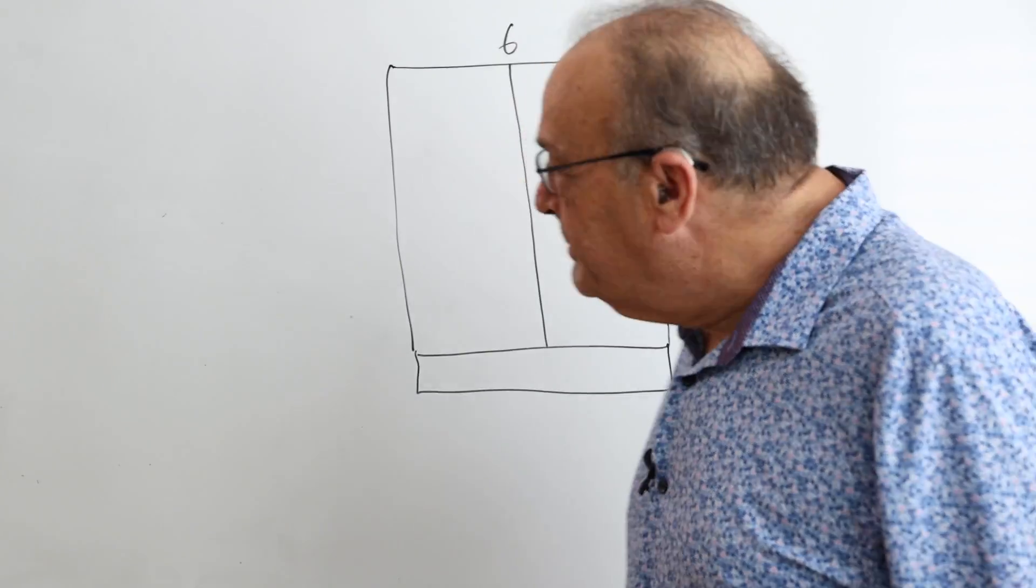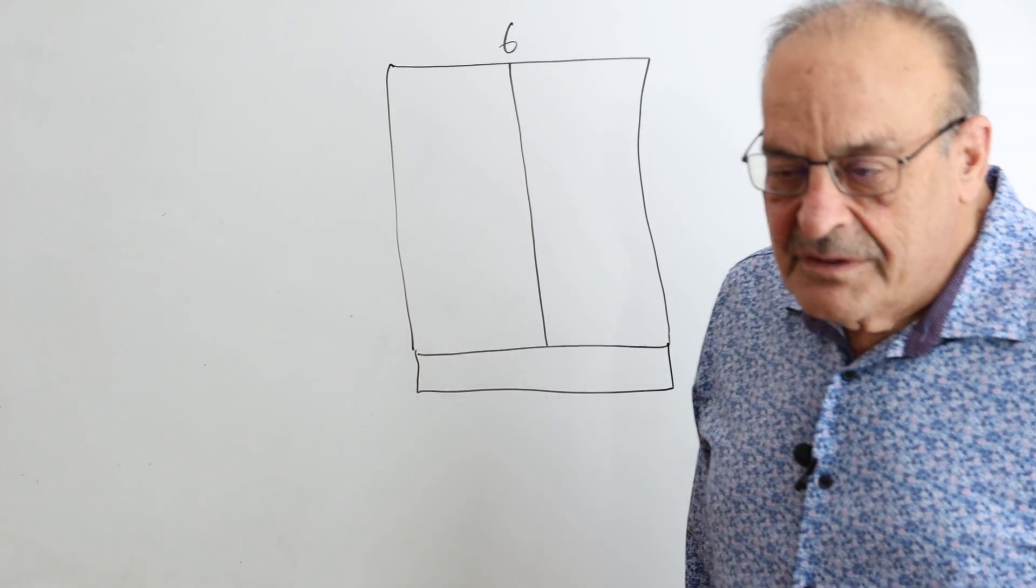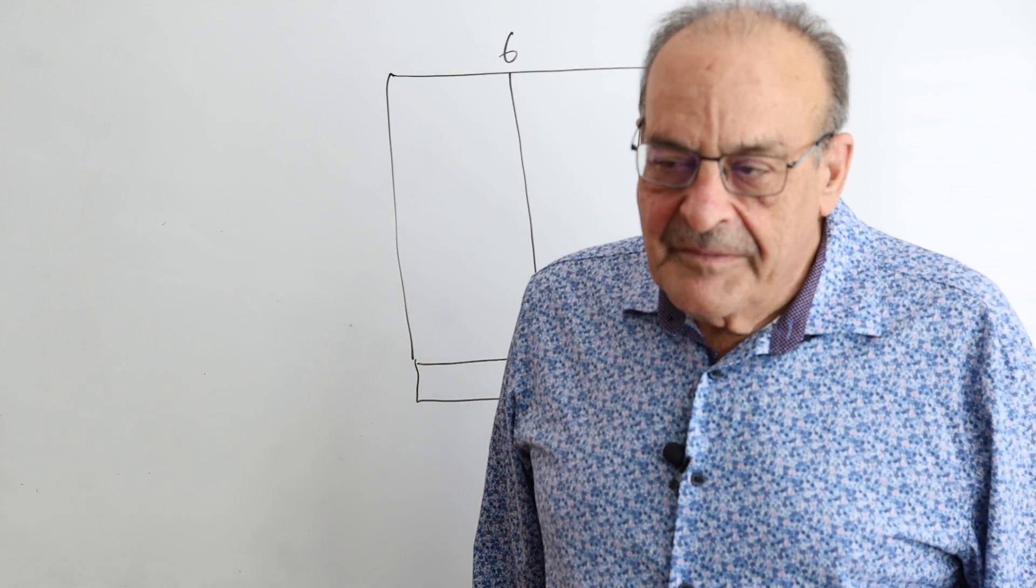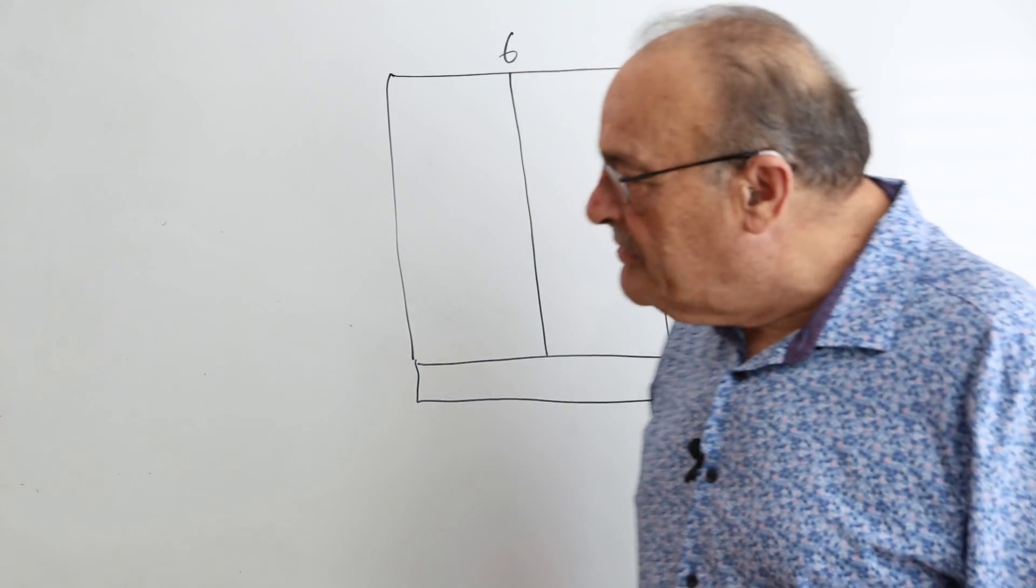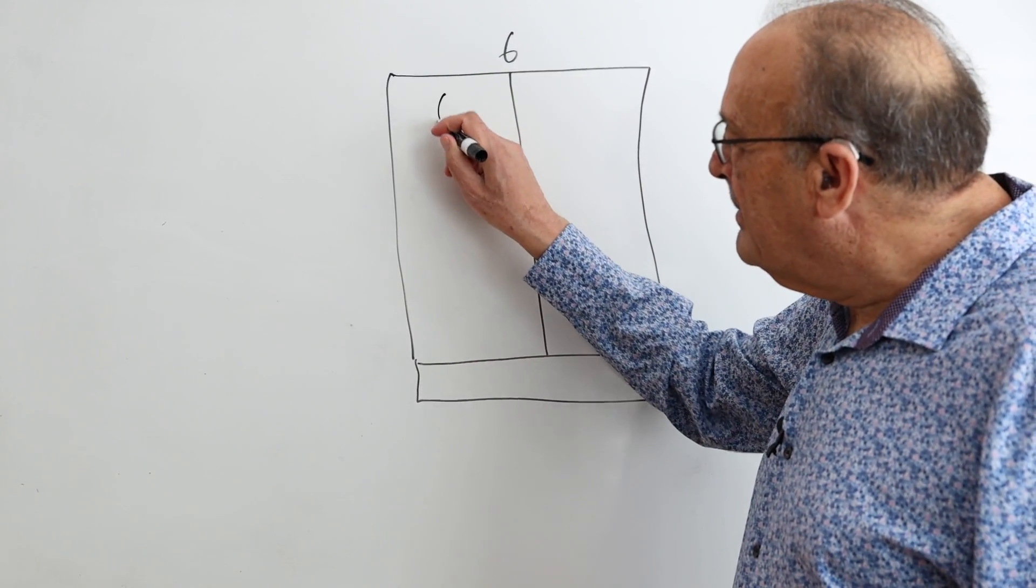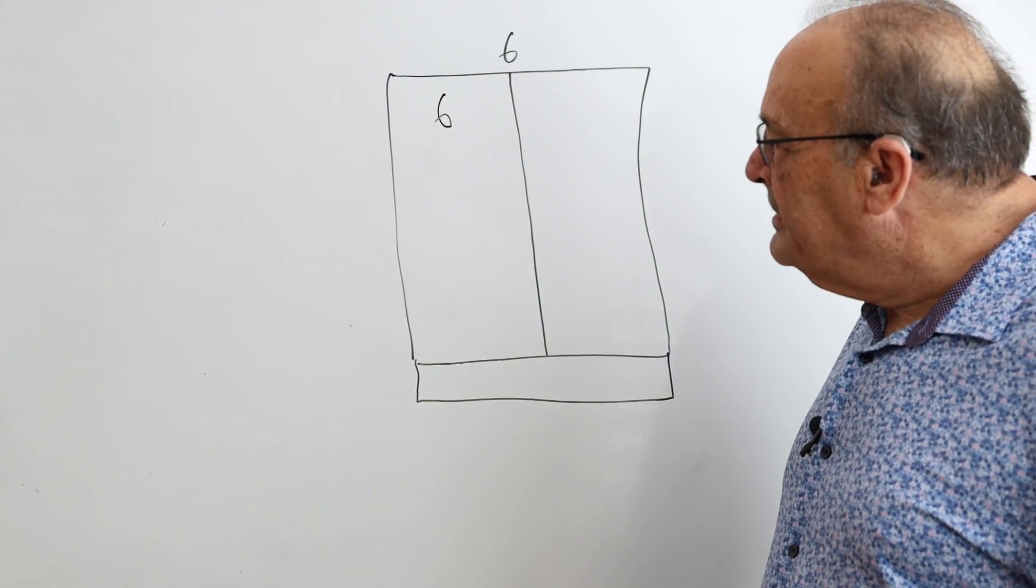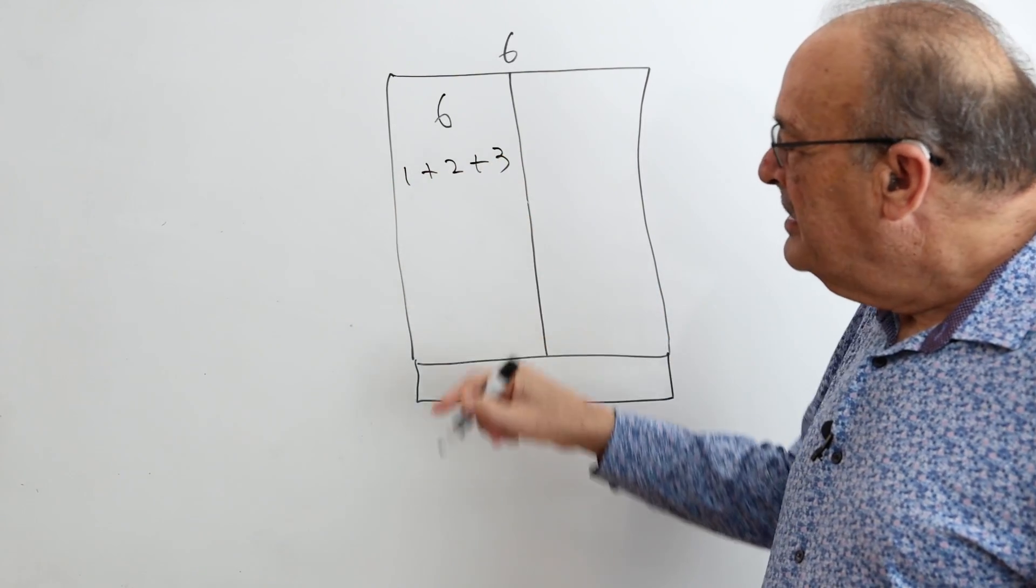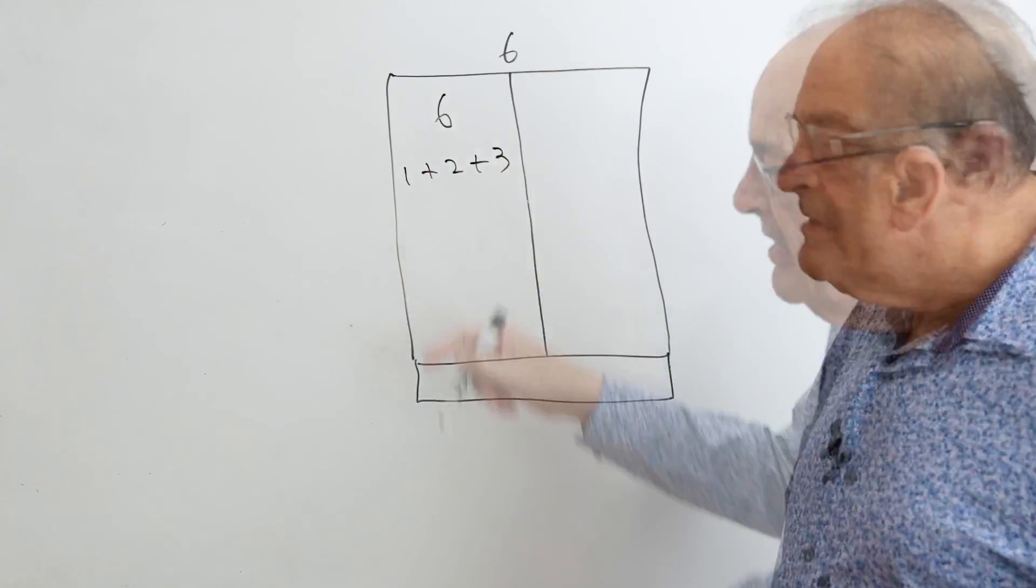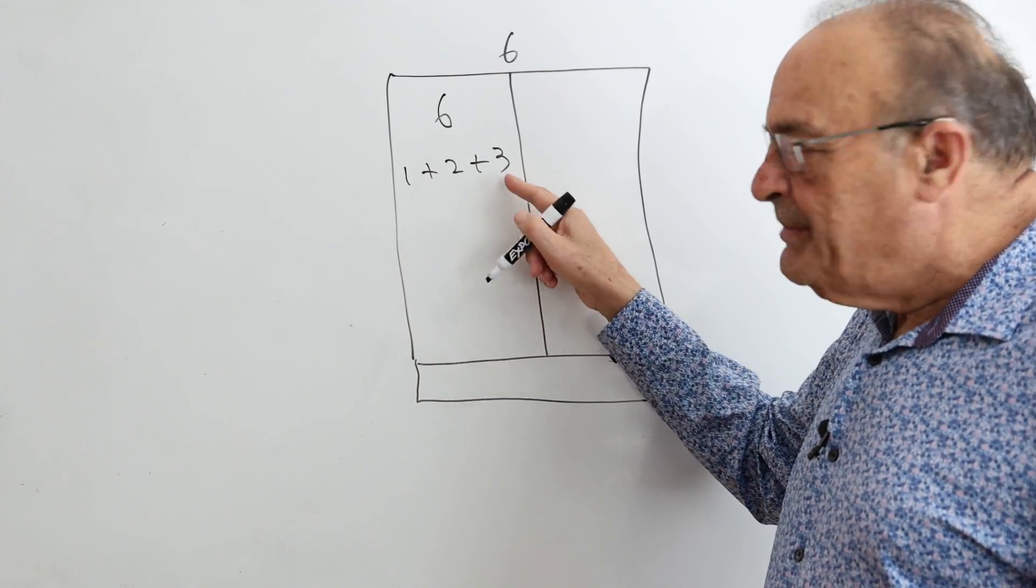Today we're going to look at a partition problem, and in this partition problem, we're going to be working with the number 6, and we're going to break it up into distinct numbers. We're not going to repeat any numbers. So I can write 6 as itself, or I can write it as 1 plus 2 plus 3. So notice there's no repeats. When I make 6, I don't repeat a number.